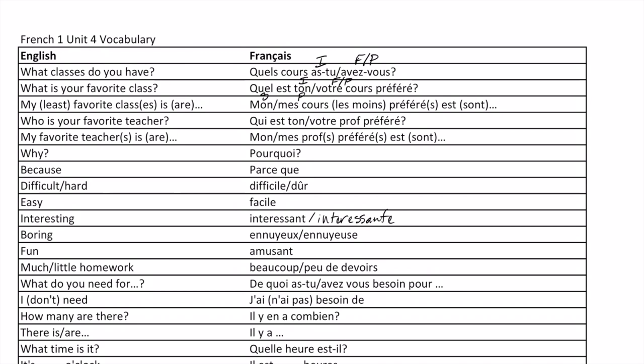'Qui est ton' — again, informal — or 'votre' — which is either formal or plural — 'prof préféré est,' if it's singular, or 'sont,' if it's plural. 'Pourquoi?' — 'Parce que.'